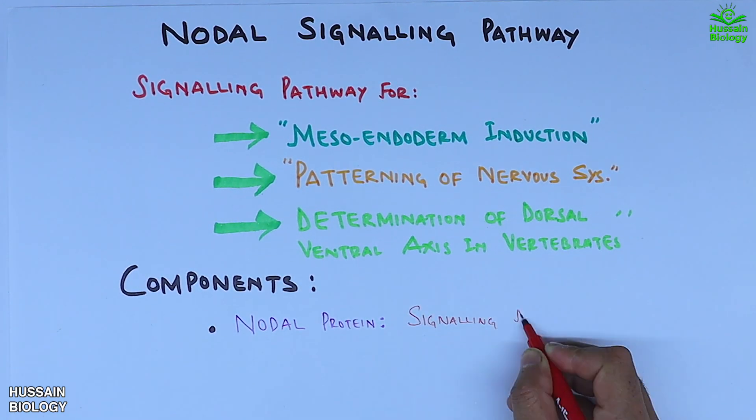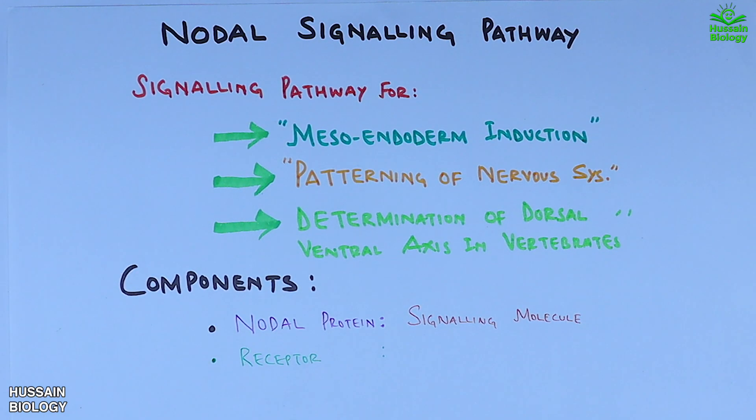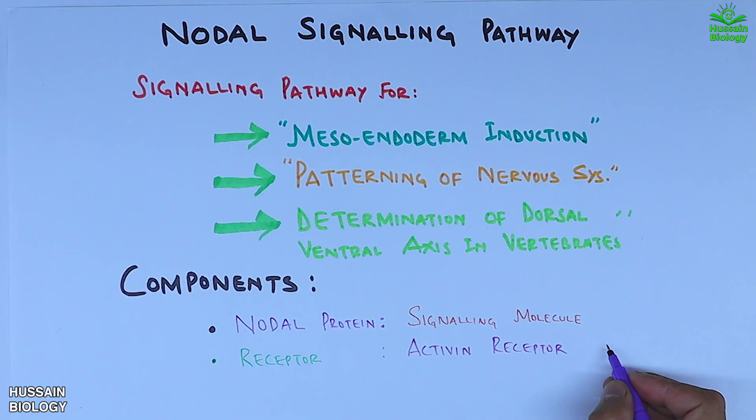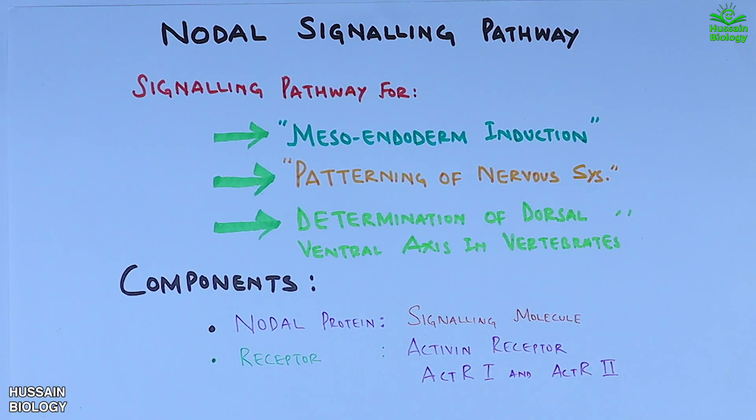which is a signaling molecule, and the receptors for these signaling molecules are activin type 1 and activin type 2. Now let's get to the pathway directly. Here in this diagram, we have the cell membrane and the nucleus